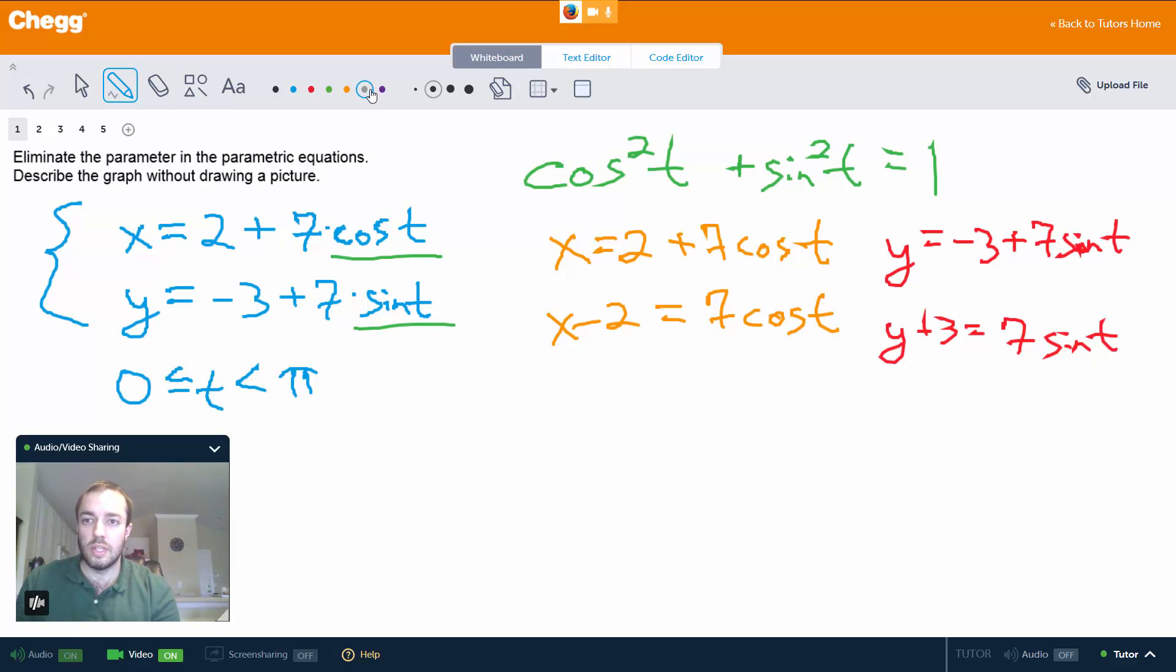Now what I want to do is square both sides at this point and then add the results. So in both of these equations I'm going to square both sides and add the results.